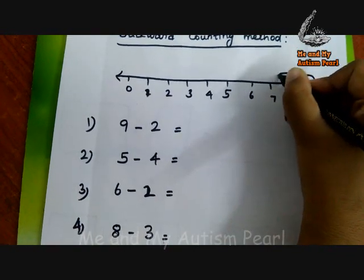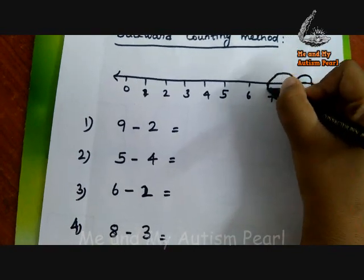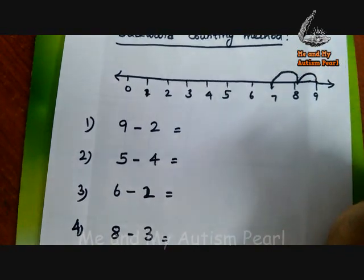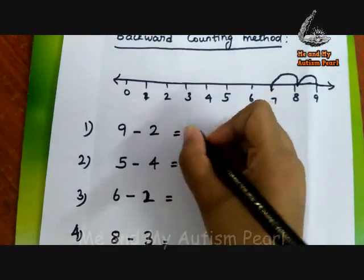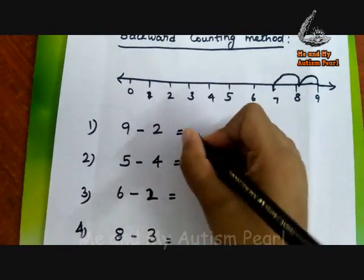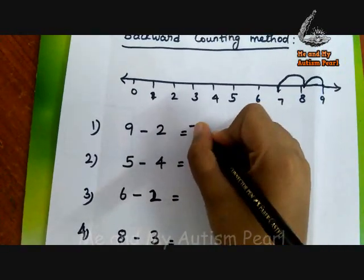Nine minus one is equal to eight. Nine minus two is equal to seven. Very good. Write it then. Seven.